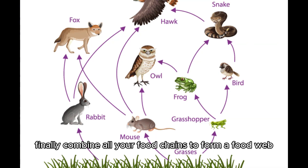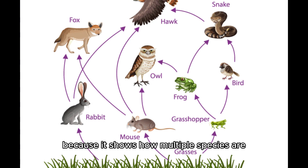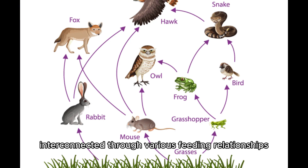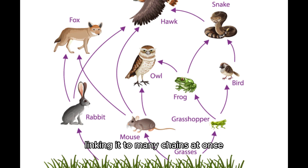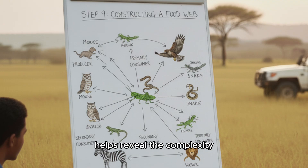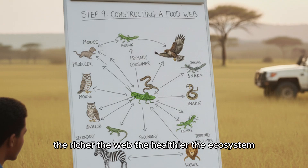Step 9: Constructing a Food Web. Finally, combine all your food chains to form a food web. A food web gives a more realistic picture of your ecosystem because it shows how multiple species are interconnected through various feeding relationships. For example, a single bird species may feed on insects, fruits, and seeds, linking it to many chains at once. Constructing the food web helps reveal the complexity and stability of biodiversity on your campus. The richer the web, the healthier the ecosystem.